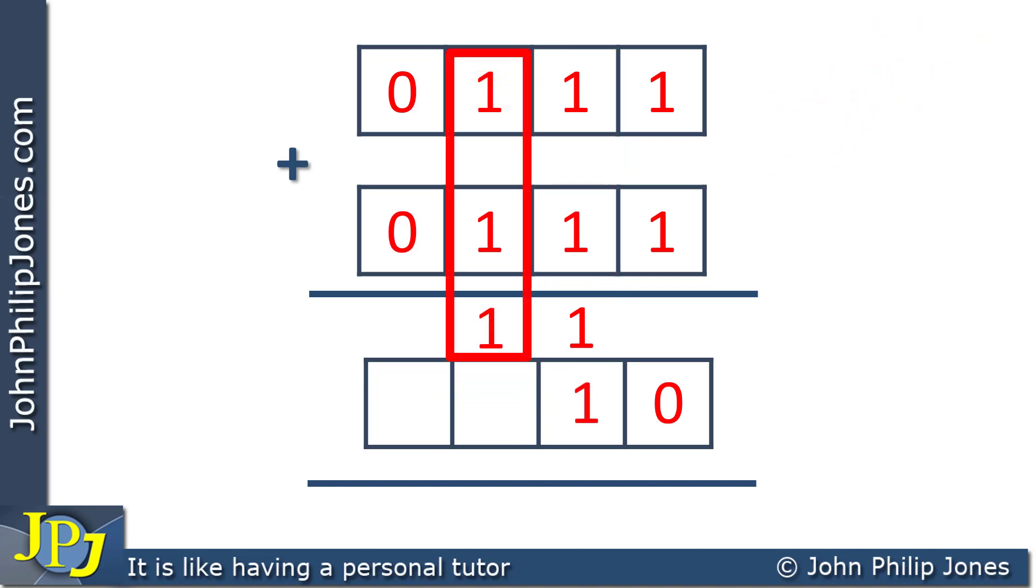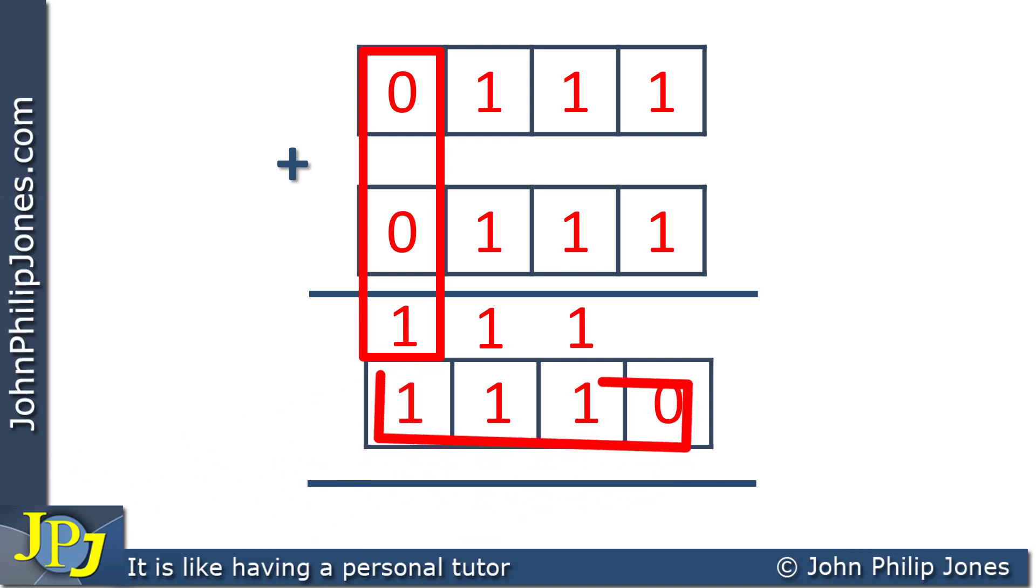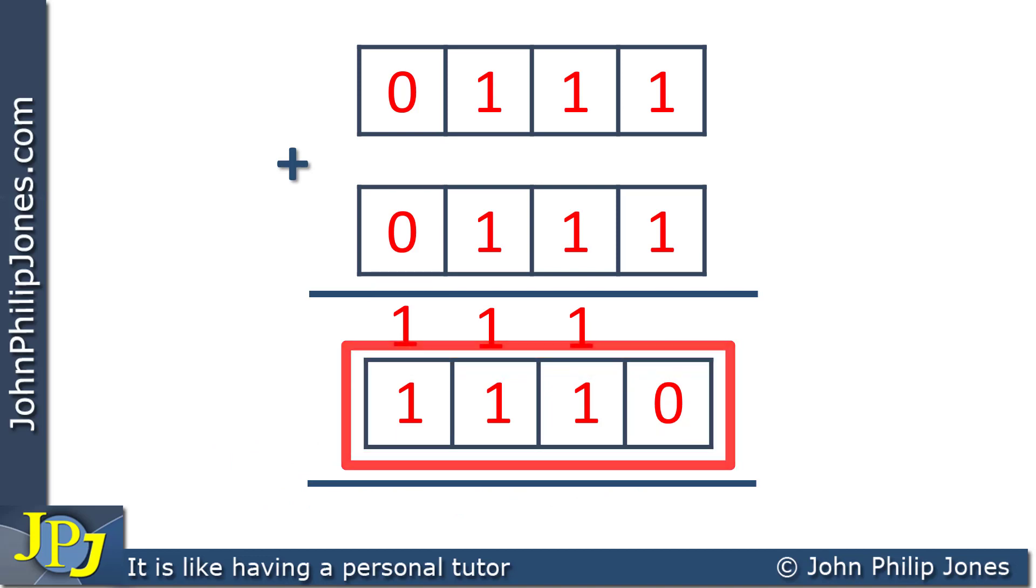Now we perform the addition of these three 1s, which is 3. We put the 1 down and carry the 1. Now we perform the addition of these, making sure we take into account the carry. Of course, 0 plus 0 plus 1 is 1. You can see here we have the final result shown in this register.